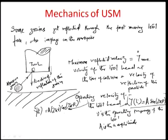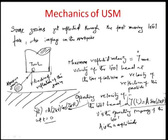At time t = 0, which signifies the mean position of the tool where velocity is maximum, y_dot(t) equals y_dot_max, which is A times 2 pi nu. So A times 2 pi nu is essentially the maximum velocity of motion, y_dot_max.